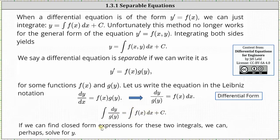If we can find closed form expressions for these two integrals, we can perhaps then solve for y. Now let's talk more about how we go from the form of dy dx equals f of x times g of y to the integral of dy divided by g of y equals the integral of f of x dx.